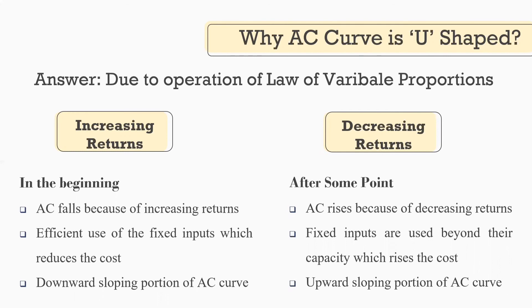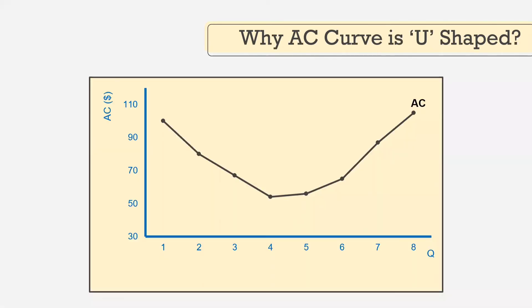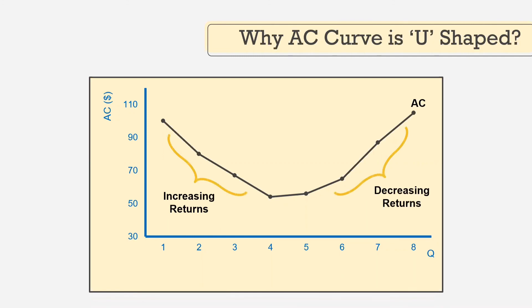So the downward sloping portion of the average cost curve depicts increasing returns. You can see the downward sloping portion which shows increasing returns and the upward sloping portion that shows decreasing returns. Here we have point H at which average cost is minimized, and the quantity produced at this point is known as the efficient scale of the firm. This is the reason behind the U-shape of the average cost curve.